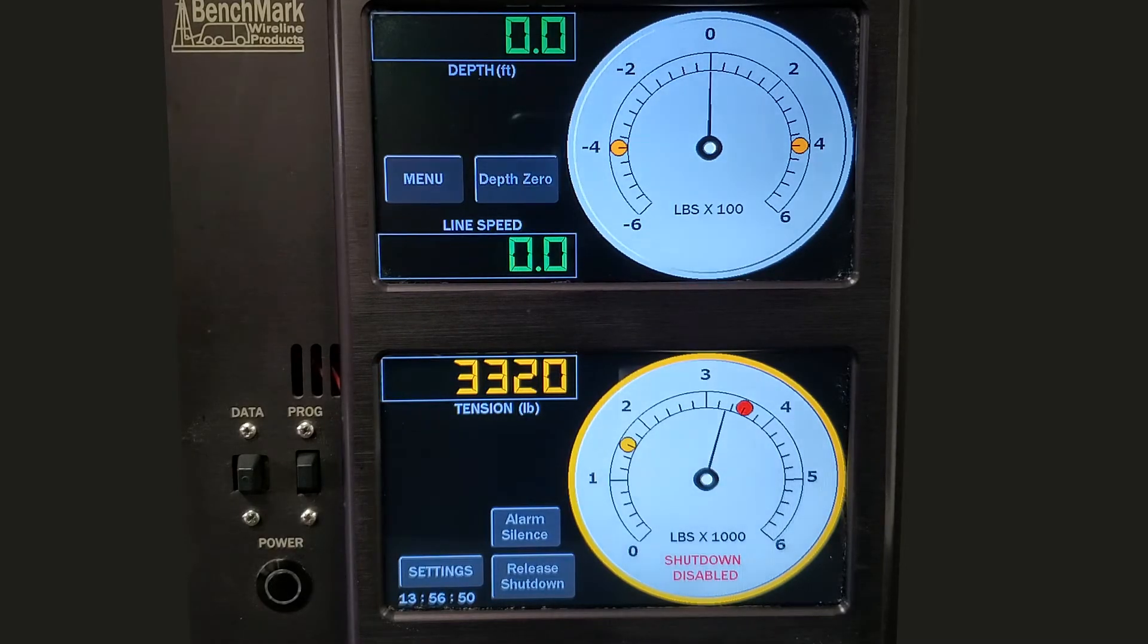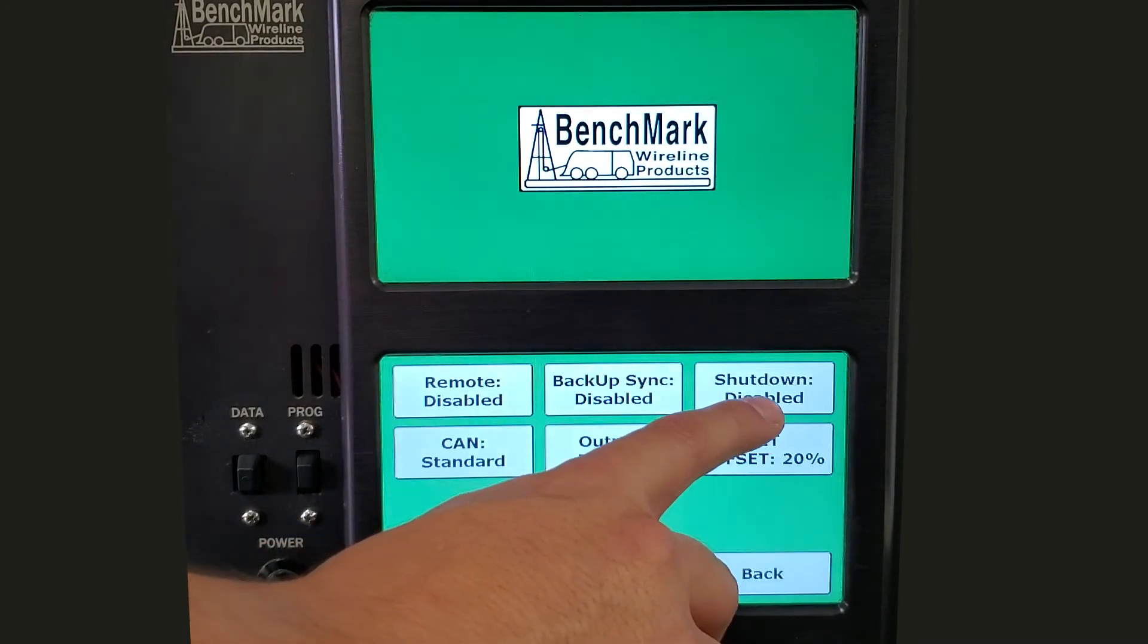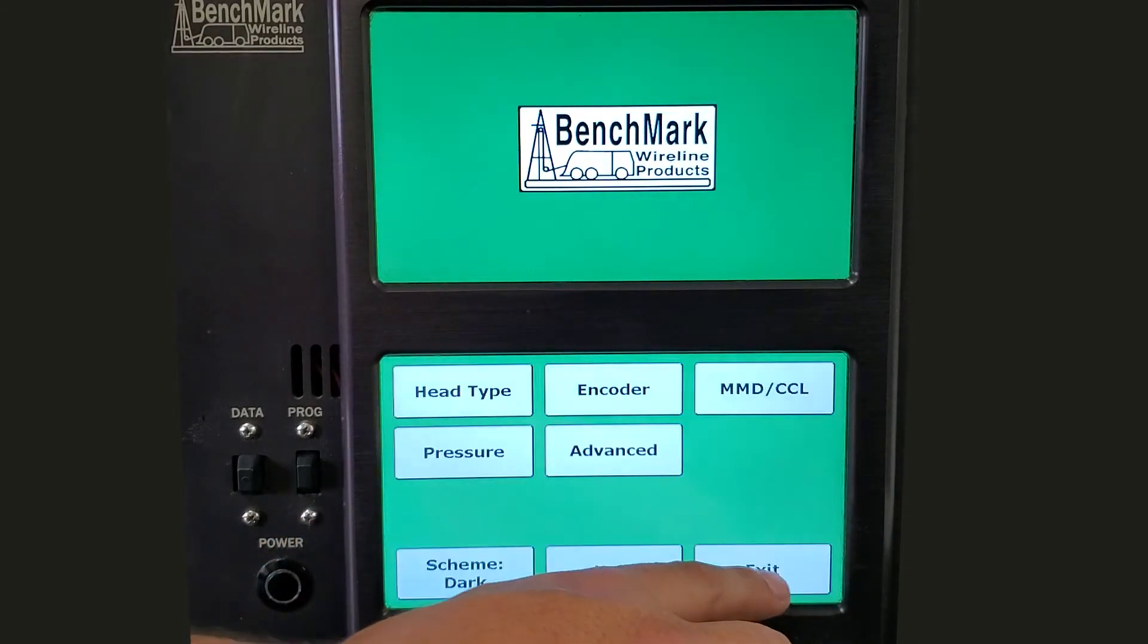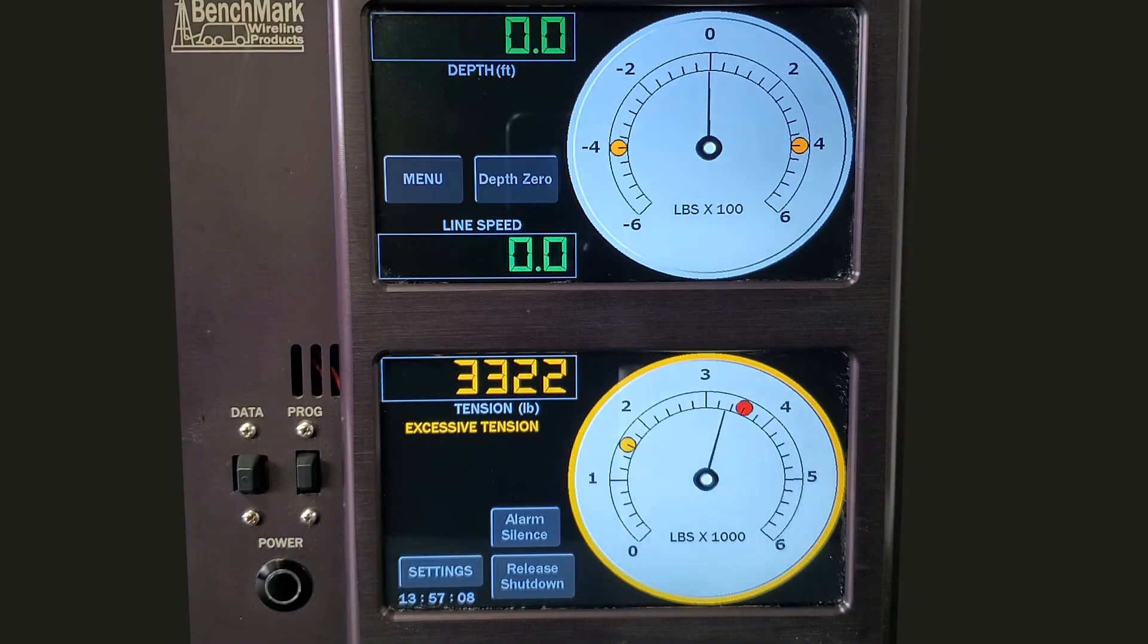After the line is free, be sure to promptly turn off the Shutdown Disabled command, which will restore the shutdown safety system. To do that, click Settings, Advanced, Shutdown Disabled, which re-enables the shutdown safety system, then Back and Exit. The shutdown disable message will be gone and the system will be restored.